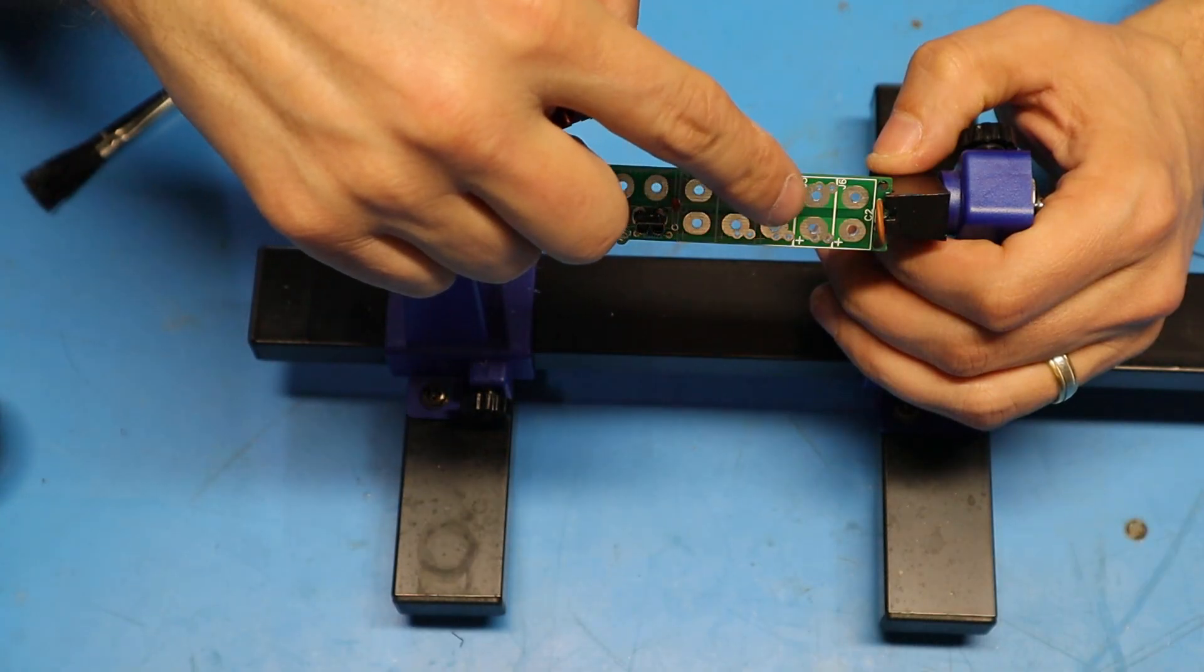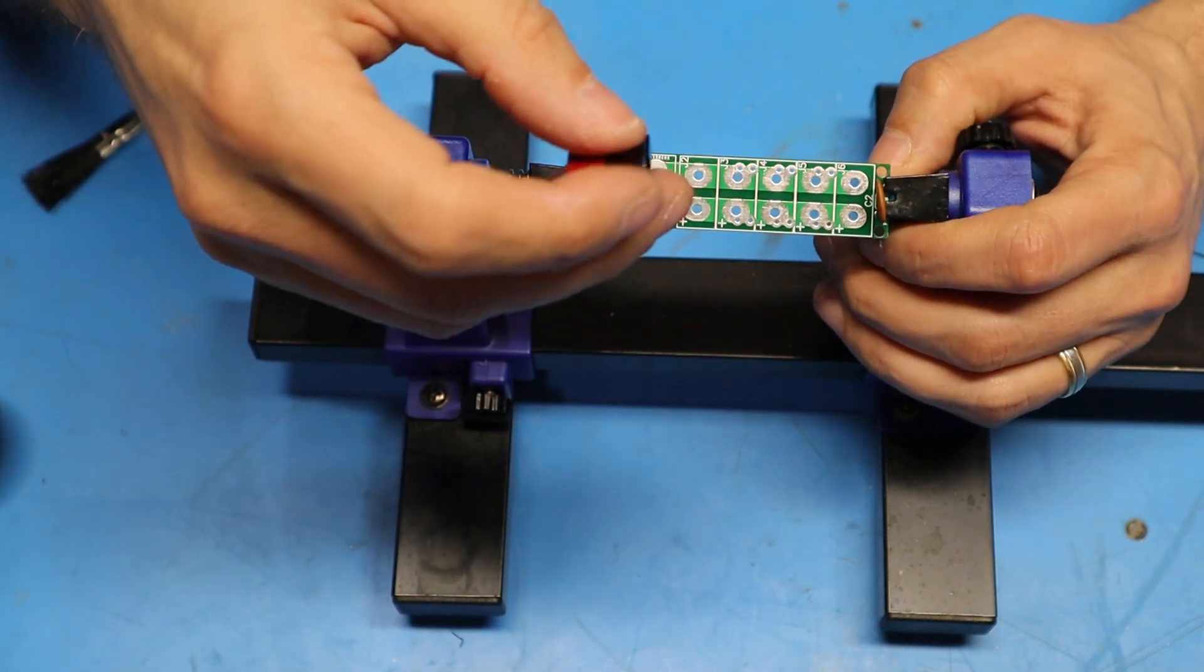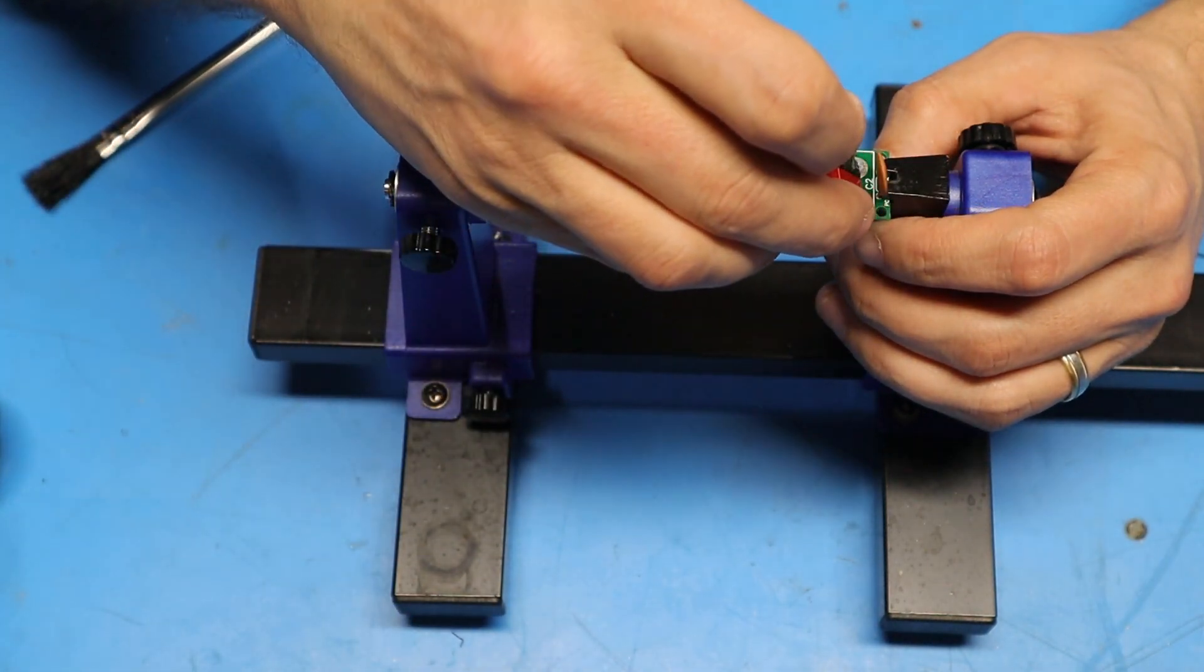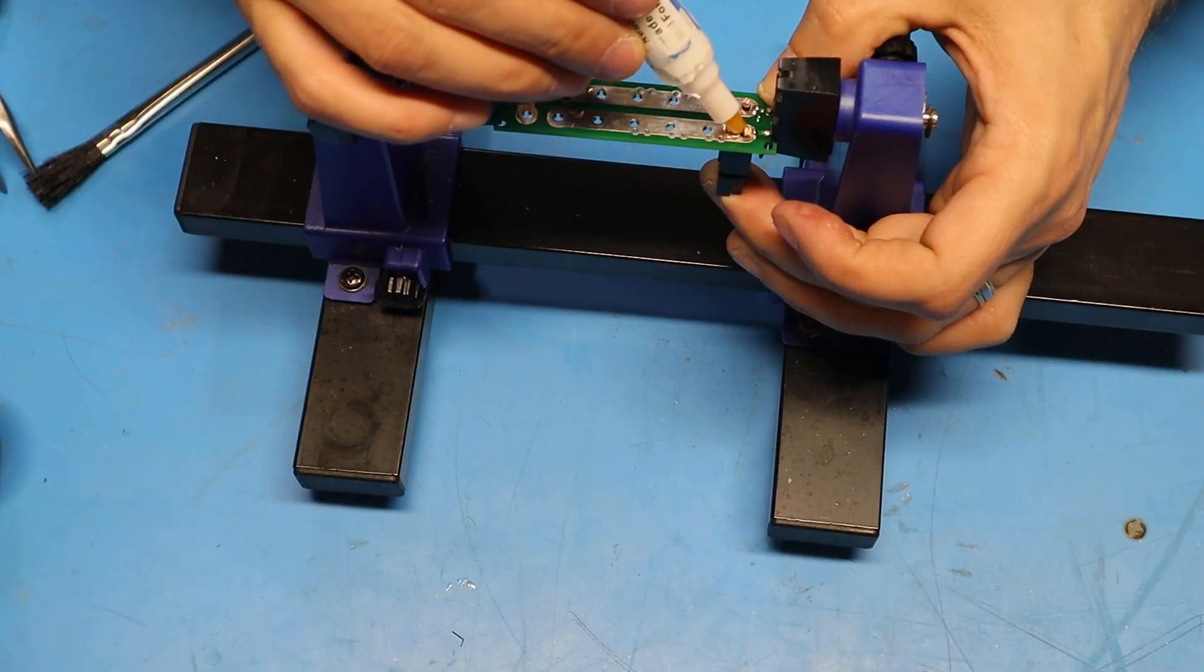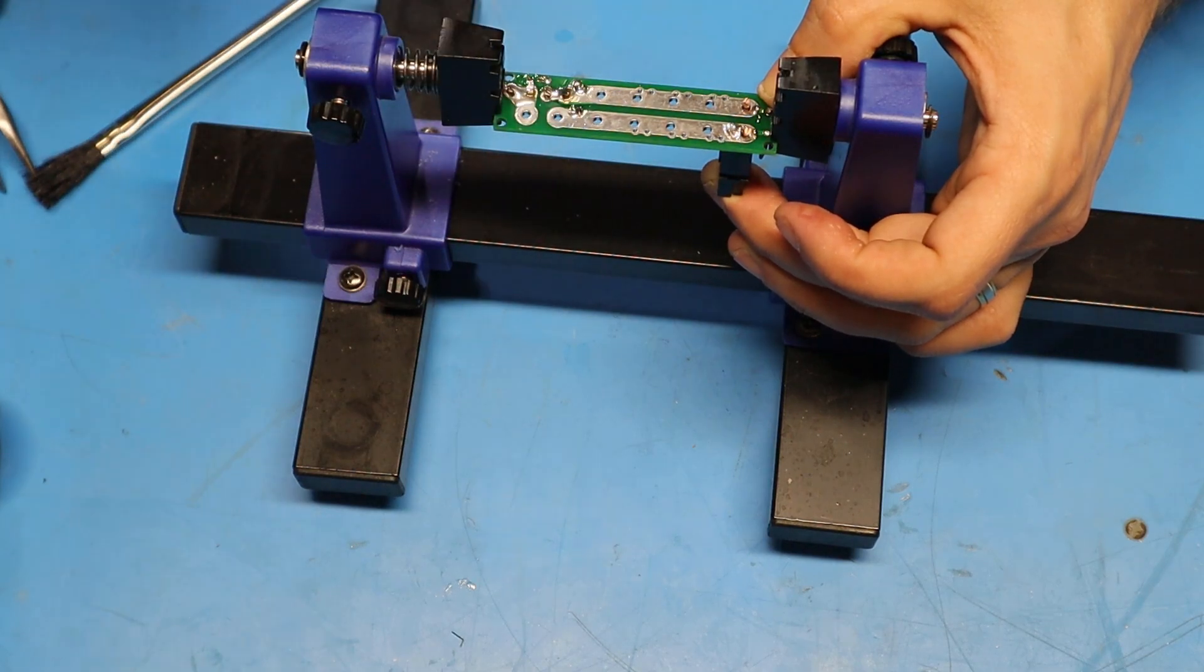You may be able to see that each one of these locations has a plus sign and that's the side that the red terminal will go into. I'm going to orient these as such and solder them in. It's also going to be necessary to add a little bit of flux here so that the solder will wet to the wire.